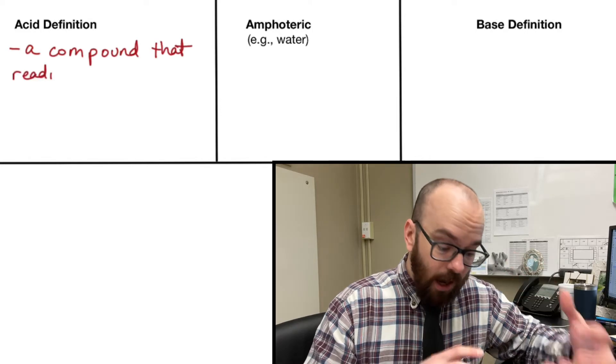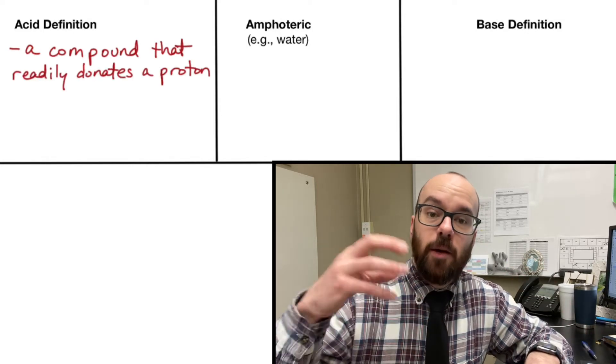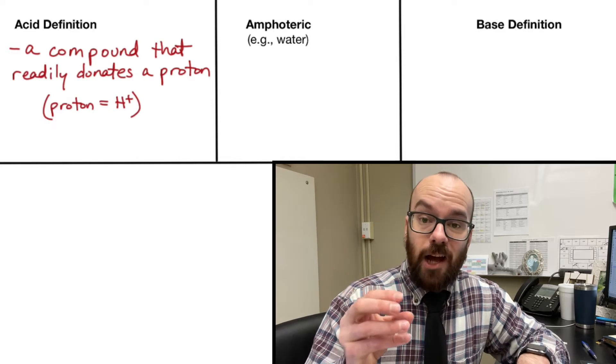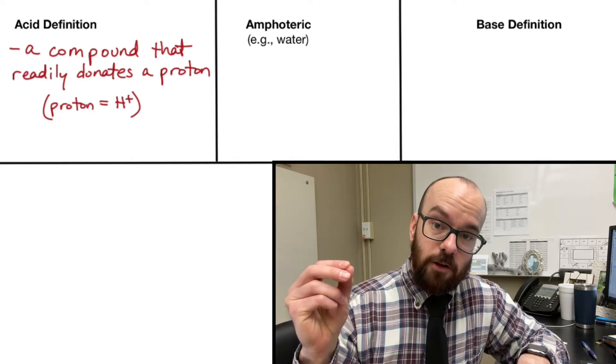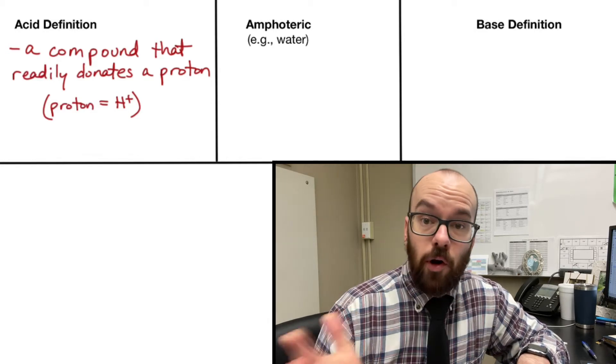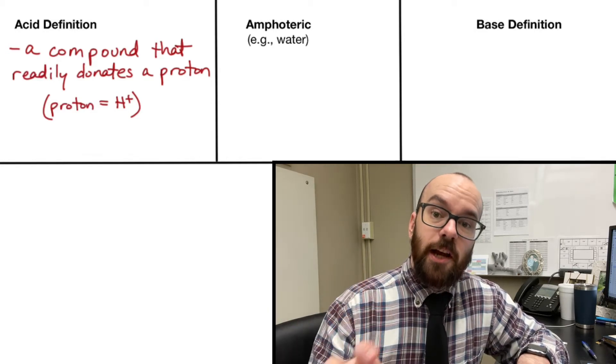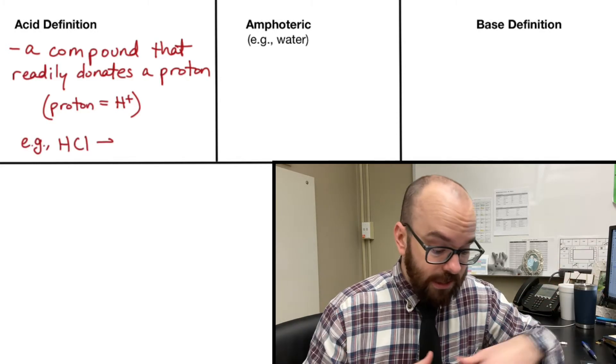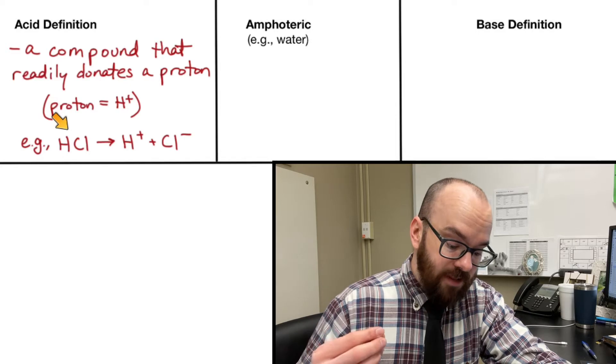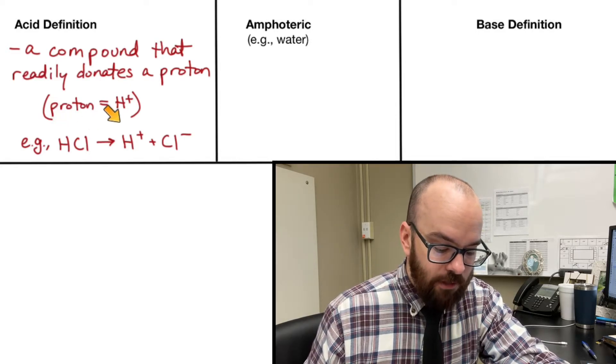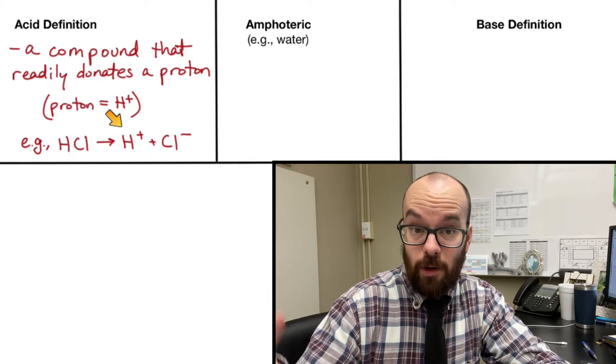An acid is a compound that readily donates a proton, and by proton I mean a hydrogen ion. A hydrogen ion, if you take a hydrogen atom and remove an electron from it, all you have left is a single proton in the nucleus with no electrons. So an H+ ion we often just call a proton when talking about acids and bases. Here's an example: hydrochloric acid is an acid because it won't stay as HCl, they'll separate and that chlorine will donate this hydrogen to something else, to a water molecule.